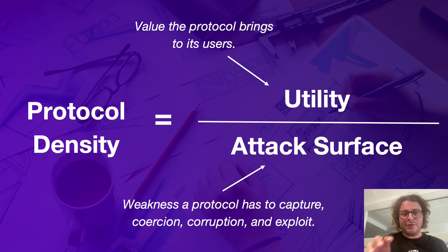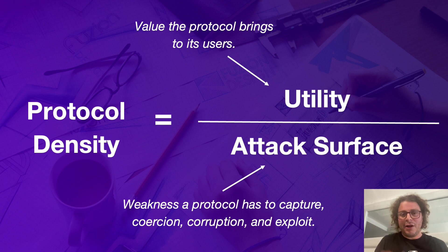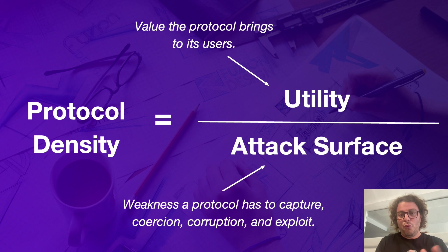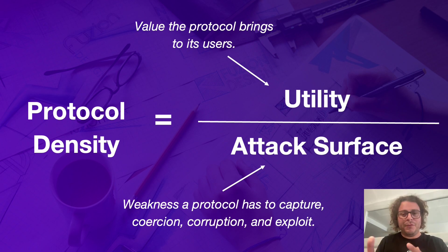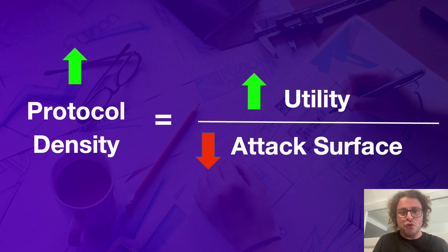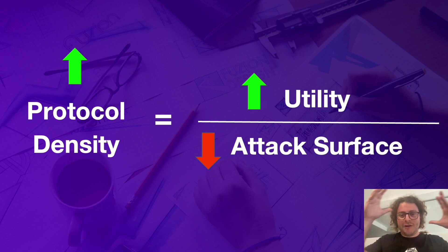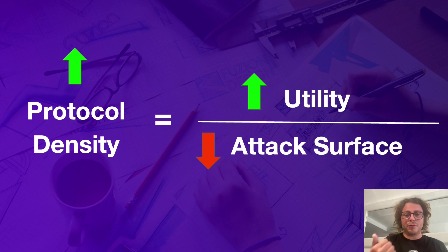There is a formula that says protocol density depends on two things: utility divided by attack surface. Utility is about how valuable the protocol is for users and what value proposition it gives. The attack surface is about how a protocol can be captured, coerced, or corrupted to favor some groups over others. Generally, the strategy to increase protocol density involves two decisions: increase the utility of the protocol, and decrease the attack surface.